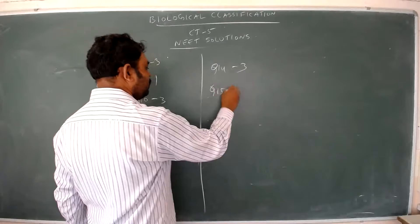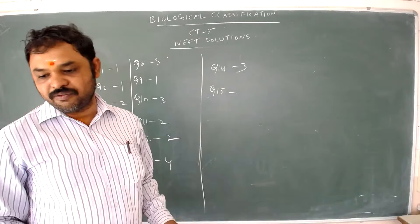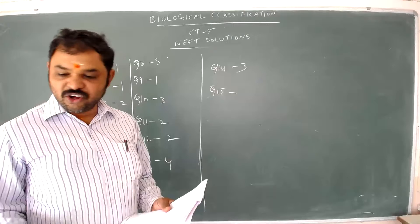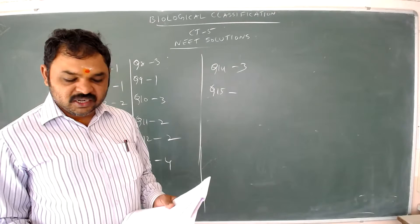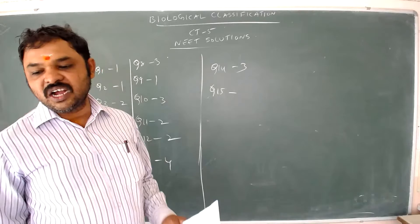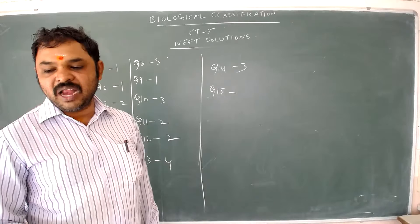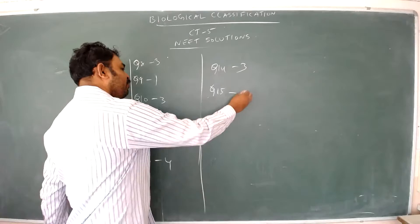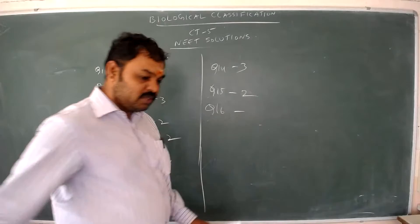Question number fifteen: cellulose is the major component of the cell wall. Cellulose is found in plants. Among the options — Saccharomyces (fungi), Pseudomonas (bacteria), Xanthomonas (bacteria) — only PGM (Pinus/a plant) is a plant. So option 2 is correct, as only the plant has cellulose as the major cell wall component. Answer to question fifteen is option 2.